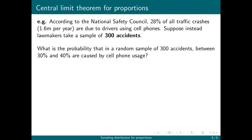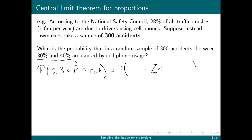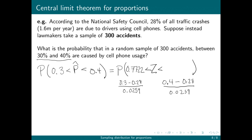Finally, what is the probability that in a random sample of 300 accidents, between 30% and 40% are caused by cell phone usage? I don't have to calculate these from a count; I'm given the percents directly. So I'm looking for the probability that P-hat is between 0.3 and 0.4. The first Z-score is (0.3 minus 0.28) divided by 0.0259, which is 0.7722. The second Z-score is (0.4 minus 0.28) divided by 0.0259, which is 4.6332.